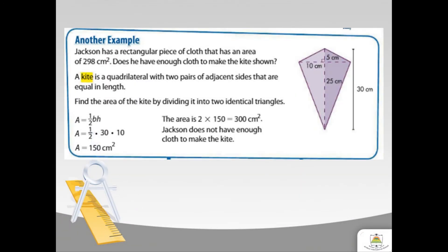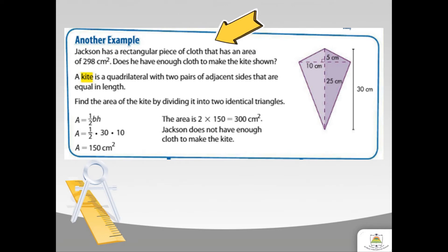Here's another example. Jackson has a rectangular piece of cloth that has an area of 298 squared centimeters. Does he have enough cloth to make the kite shown? A kite is a quadrilateral with two pairs of adjacent sides that are equal in length. We can find the area of the kite by dividing it into two identical triangles — identical meaning exactly alike.